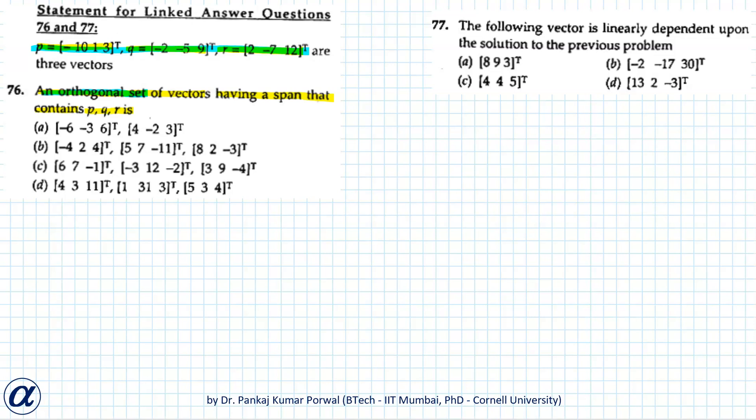I have seen this question at many online GATE forums and in most of the GATE books, but nowhere have I seen a convincing solution to this problem. The reason is that there are typographical errors in the question and in the options at most GATE forums and books. In fact, there was a typographical error in the original GATE question paper also. The question shown here is scanned from the original Electrical Engineering GATE paper of 2006, and it also has that typographical error.